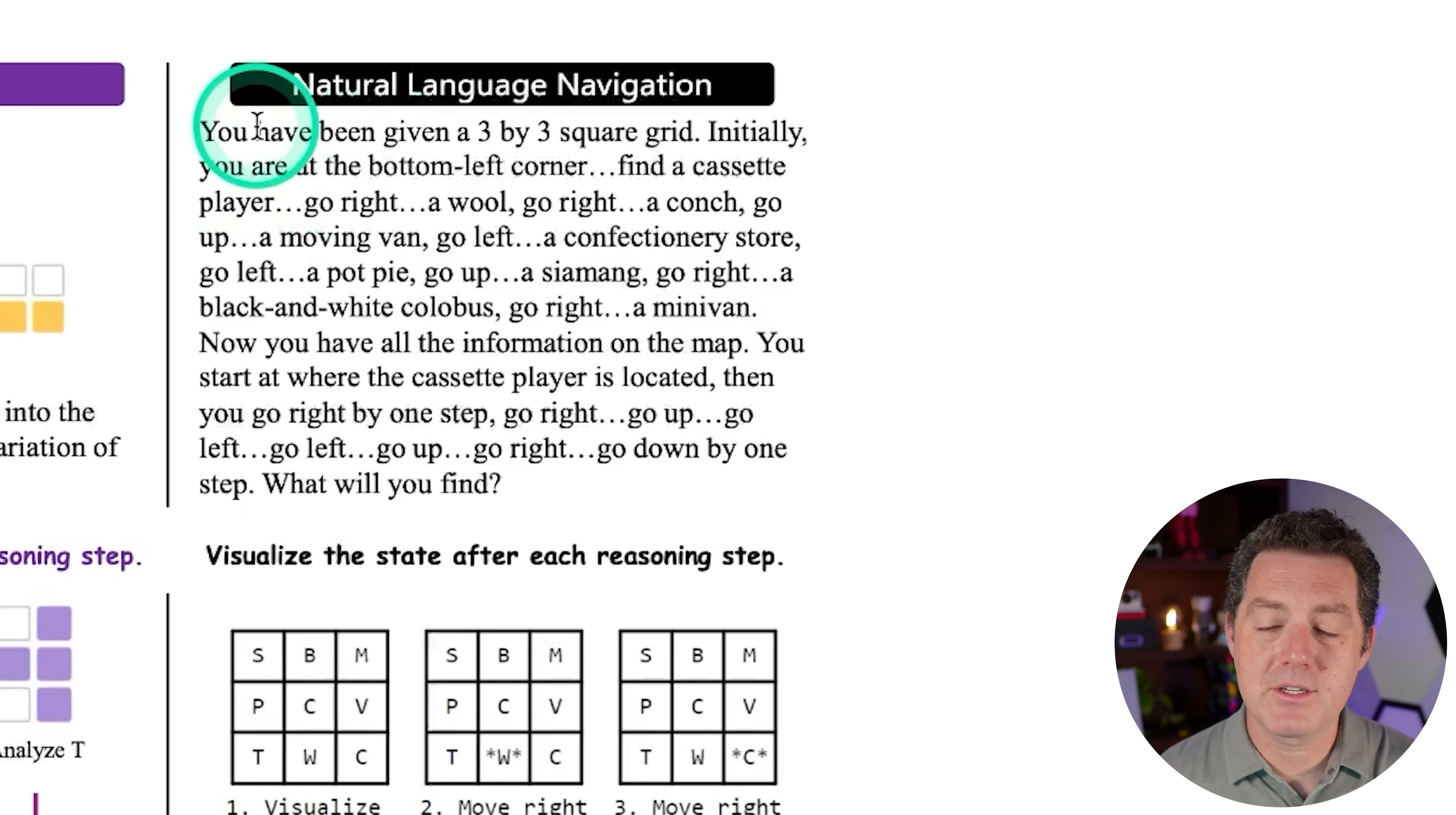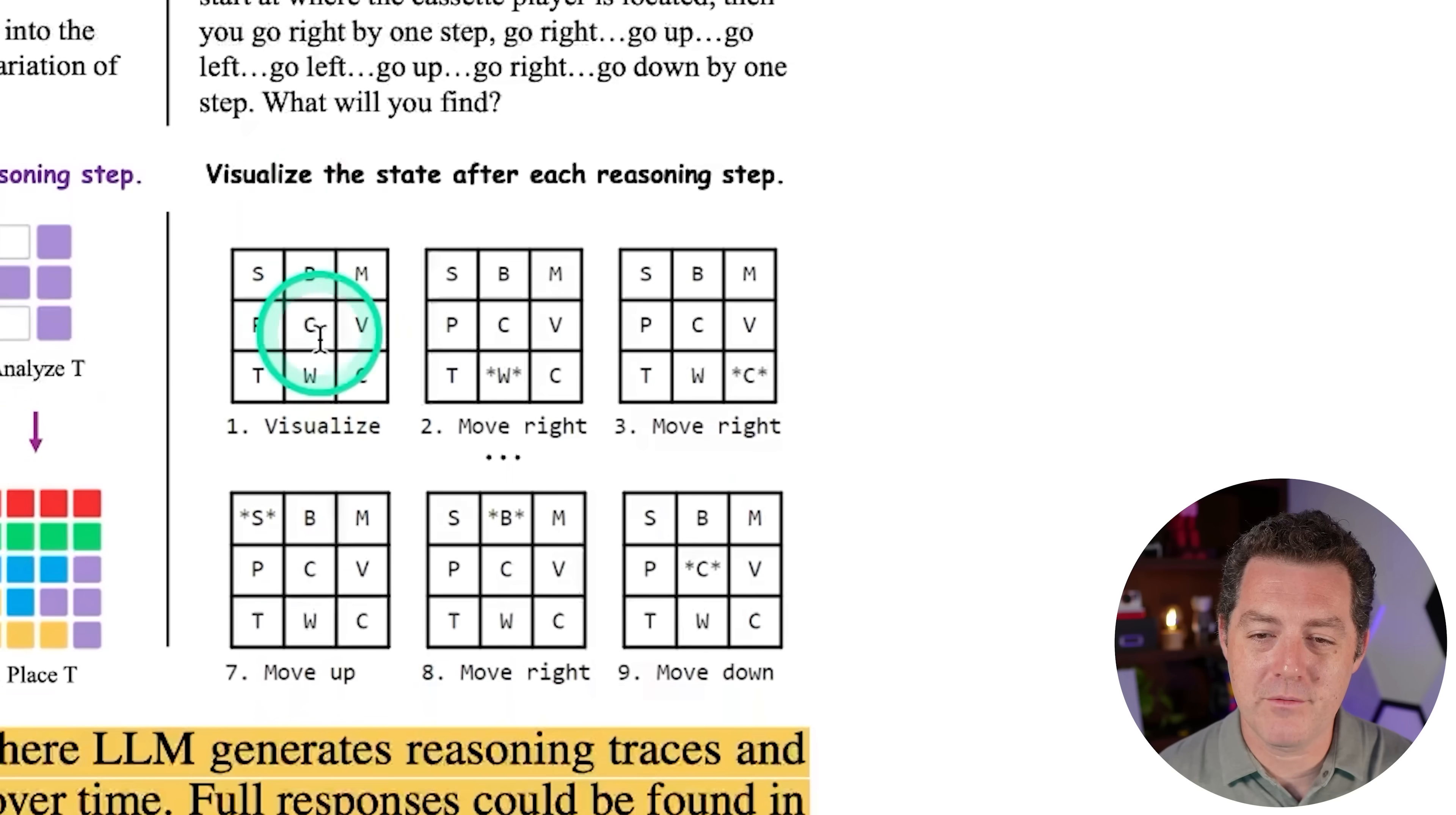And then here we have natural language navigation. So we describe a three by three grid and we tell it step by step what it needs to do. And we're actually giving it the steps. And then at the end, we say, OK, where are you? What did you find? And so we're visualizing each step. And the one with stars on it is where the large language model thinks it is in the current state. So step two, it's W. Step three, it's C. All the way up to step seven, S, and so on. And then finally, we're at C.